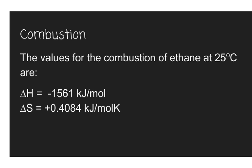If we look at the actual values for the combustion of ethane at 25 degrees Celsius, the enthalpy is indeed a negative value and the change in entropy is indeed a positive value. Going back to our equation, the change in Gibbs free energy equals the change in enthalpy minus temperature times the change in entropy. We know that the enthalpy is negative and it's going to be subtracted by a positive result, which will overall give us a negative value.